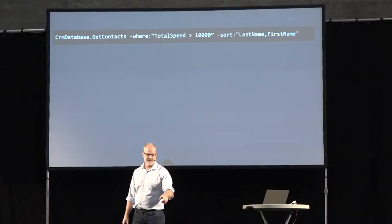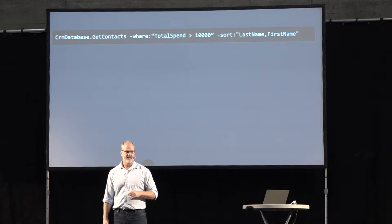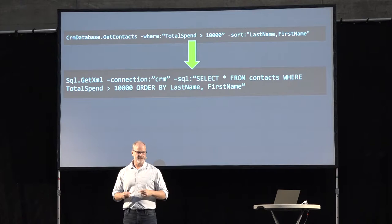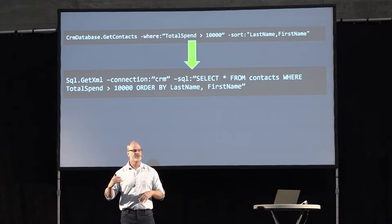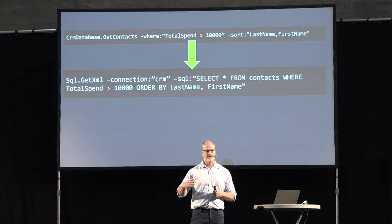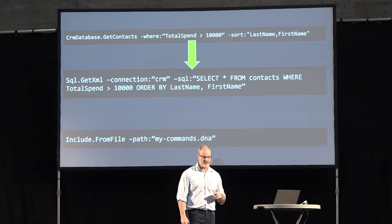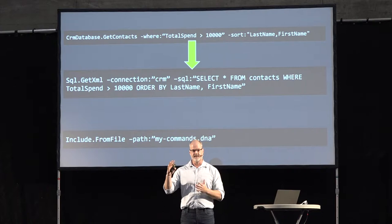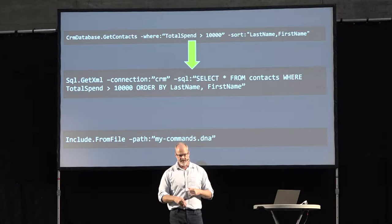We have the idea of command factories — you can alias commands. So crmdatabase.getcontacts, when editors type that, gets aliased behind the scenes to a much longer command. You can create editor-friendly command sets that editors understand — they know their CRM database and what contacts are, and can put a WHERE clause in there, without worrying about connection strings or the entire SQL string. You can do file includes that way as well — you could have a set of Denina commands on the file system that a developer writes, and then editors can just include that set of commands from somewhere else.